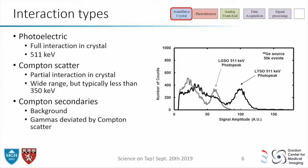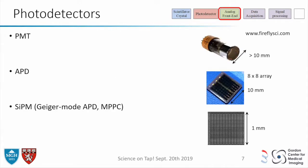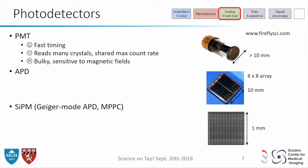After the crystal, we have the photodetector. Historically there were many kinds. One is the PMT, which is still in use today. The advantage is it's pretty fast and can read many crystals, though sharing means reduced count rate performance. The disadvantage is it's bulky and sensitive to magnetic fields, which means you can't use it in an MRI.